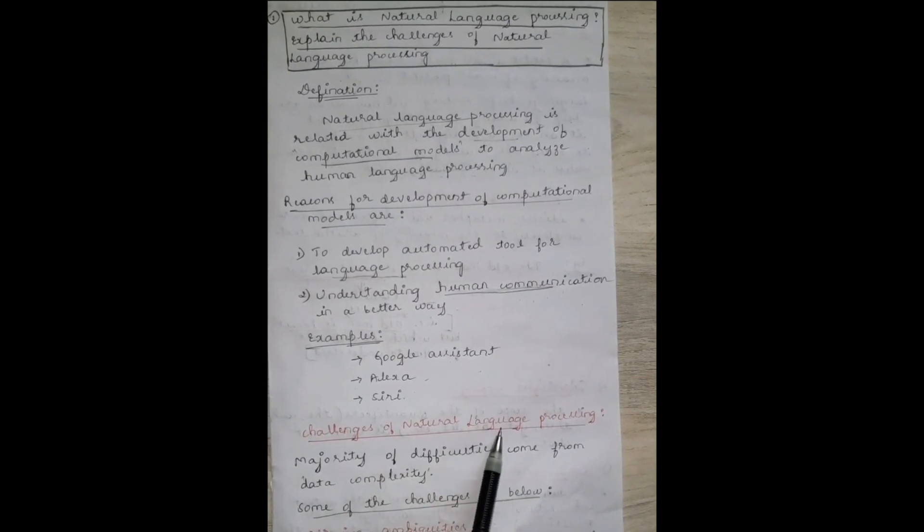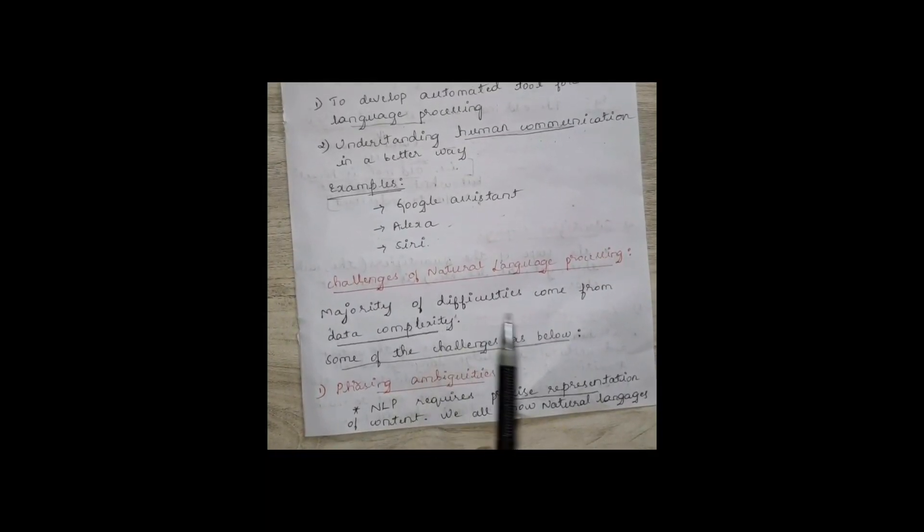Now coming to the challenges of natural language processing. The major challenge comes from data complexity — we know data is huge nowadays. If I need to quote some of the challenges, the first one is phrasing ambiguity.